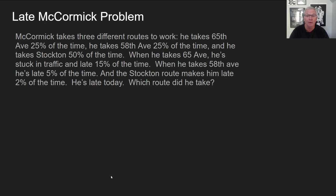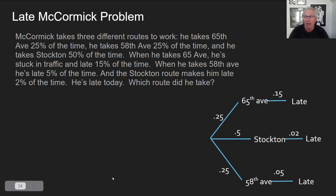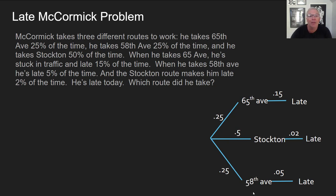This is more complicated in a couple of different ways. Trees can work just as well with three or more branches as long as they're mutually exclusive. The total ways that McCormick gets to work are by way of 65th, Stockton, or 58th Avenue — and these add up to 100%: 25, 50, and 25. I just read those numbers off the problem to give the initial distribution. Then, the rates at which he's late given those different routes: 65th he's late 15%, Stockton 2%, and 58th 5%.